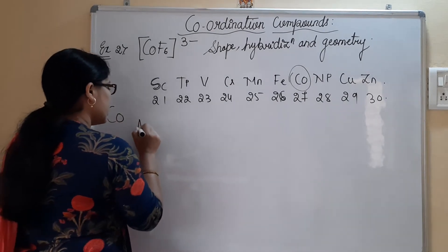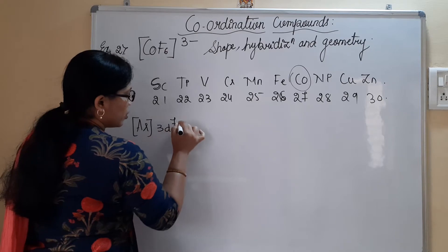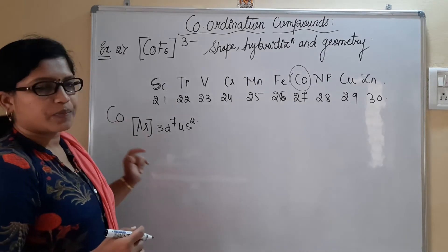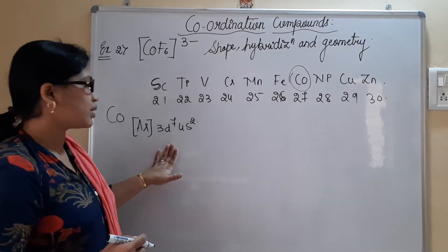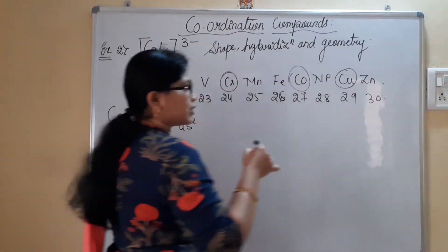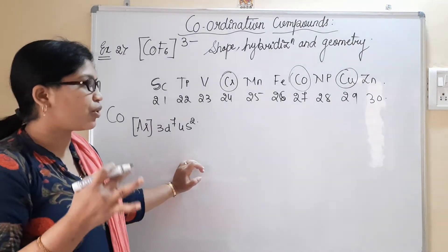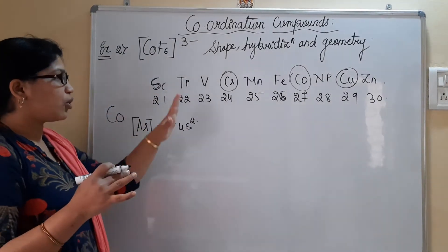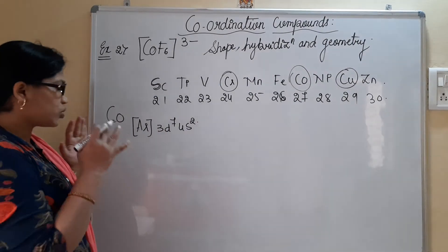The electronic configuration of cobalt is [Ar] 3d⁷ 4s². We need to know the atomic number first, then write the electronic configuration. Note that chromium and copper are exceptions because they have half-filled and completely-filled electron configurations respectively. I will explain these when we start with d and f block elements. For now, just know the 3d series and how to write the electronic configuration.